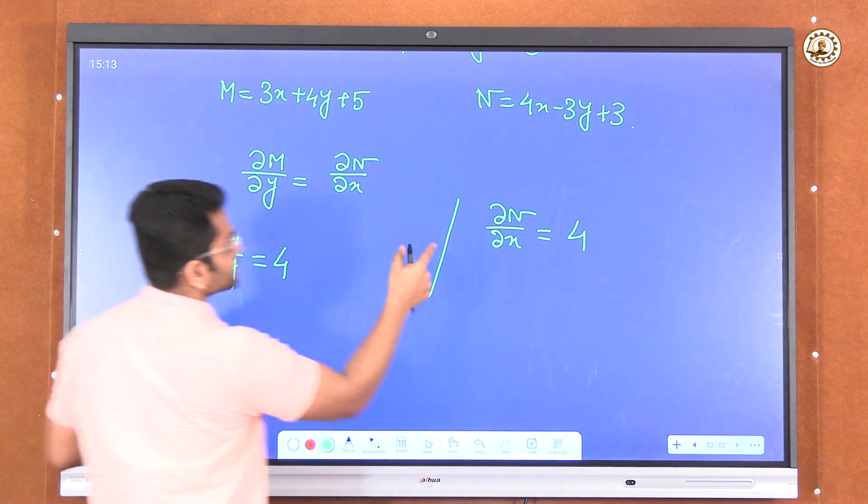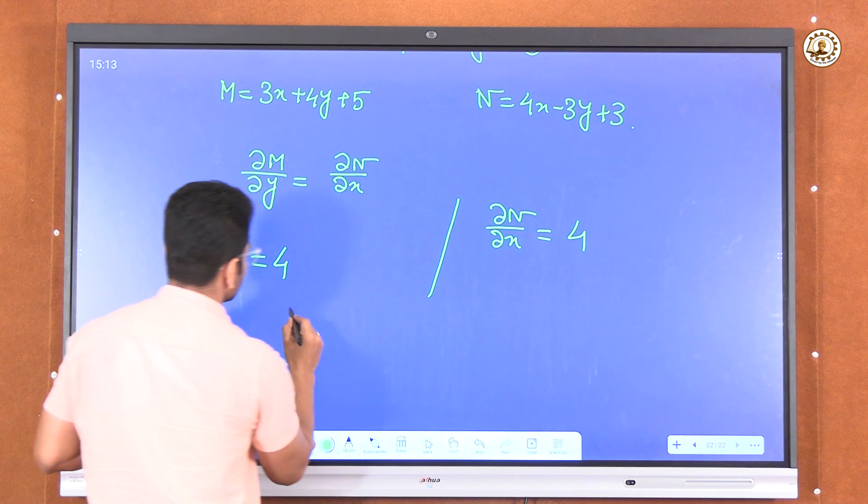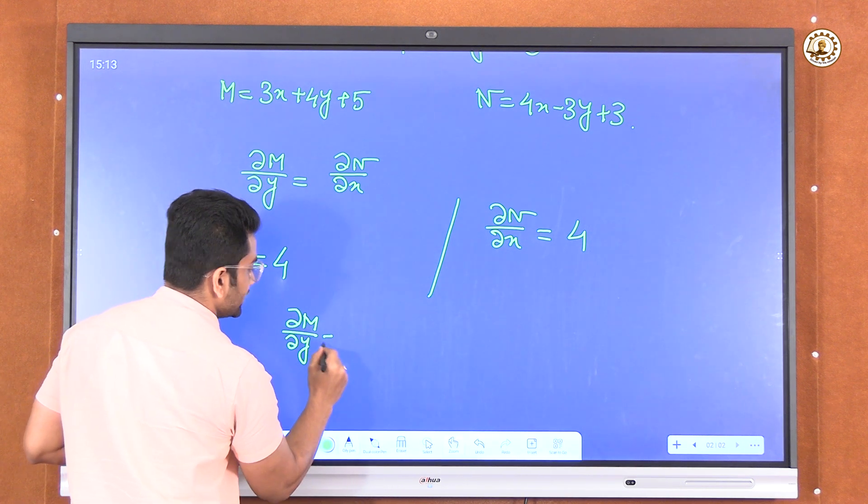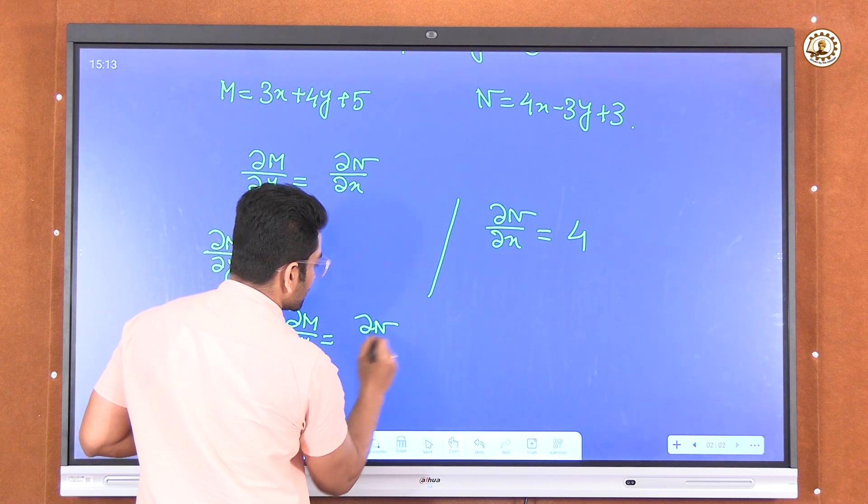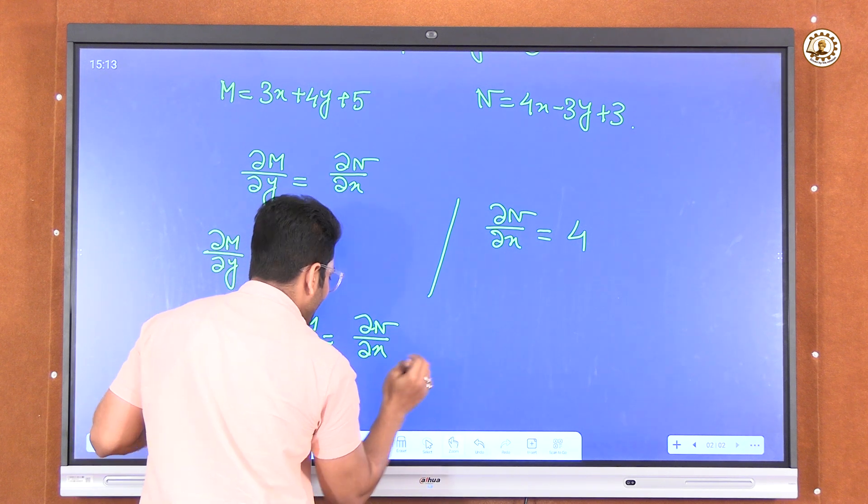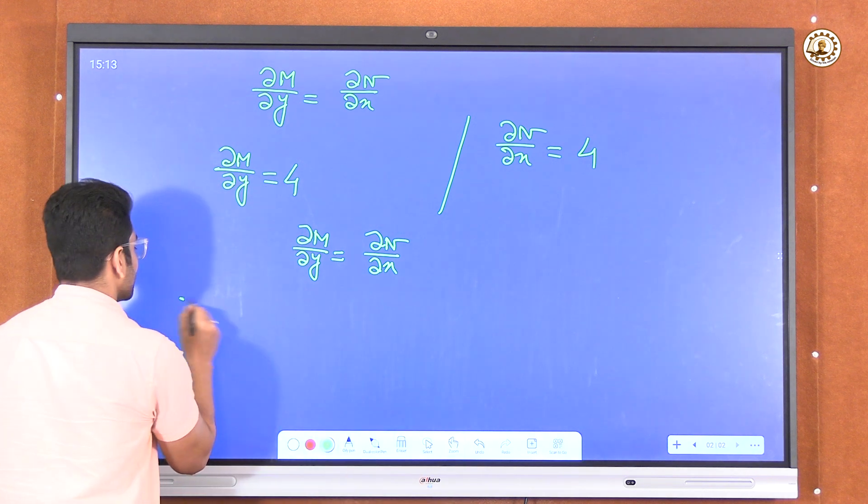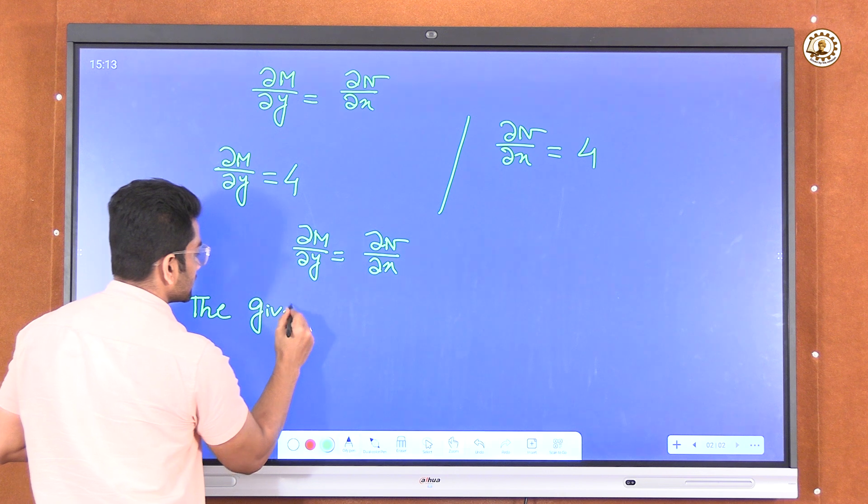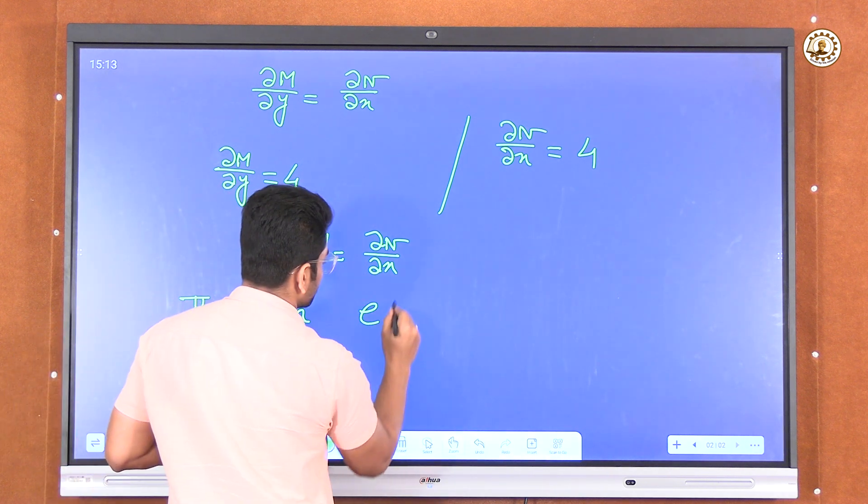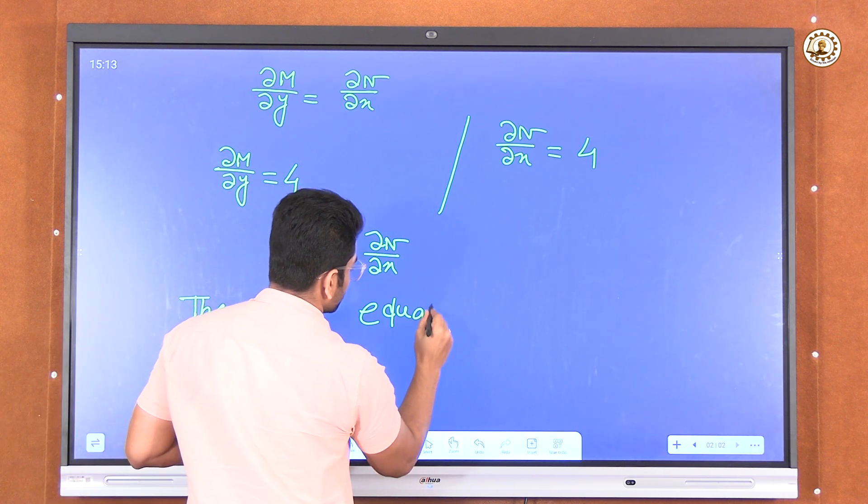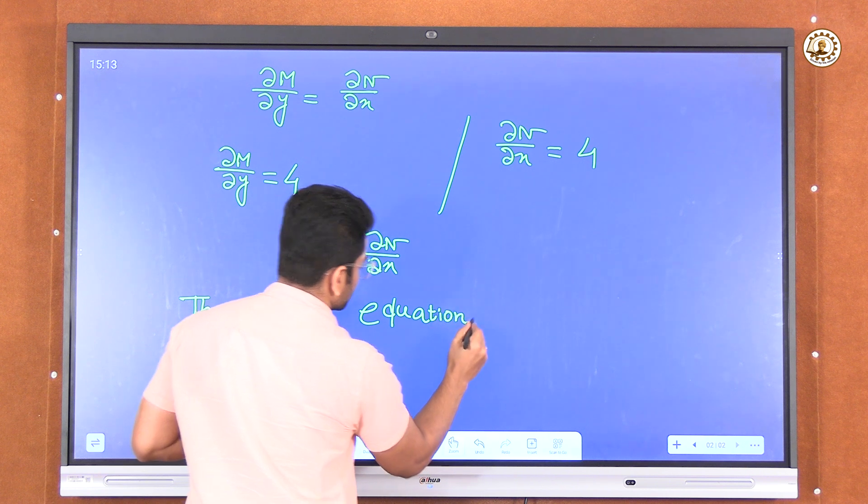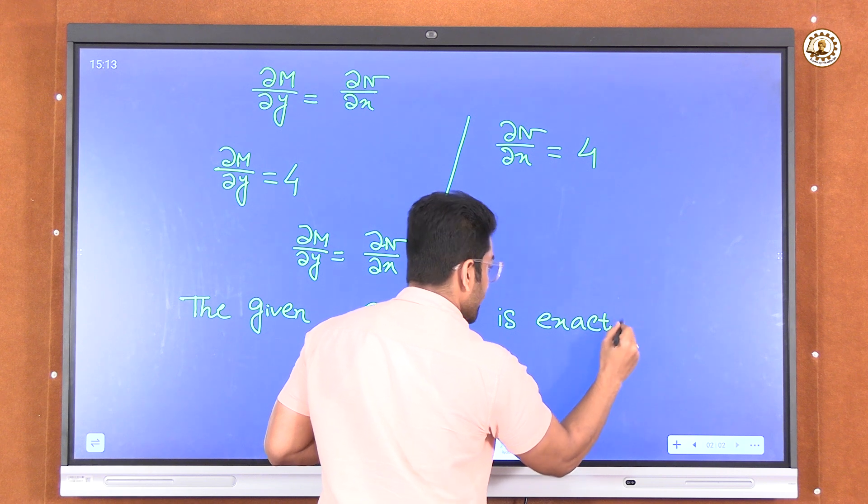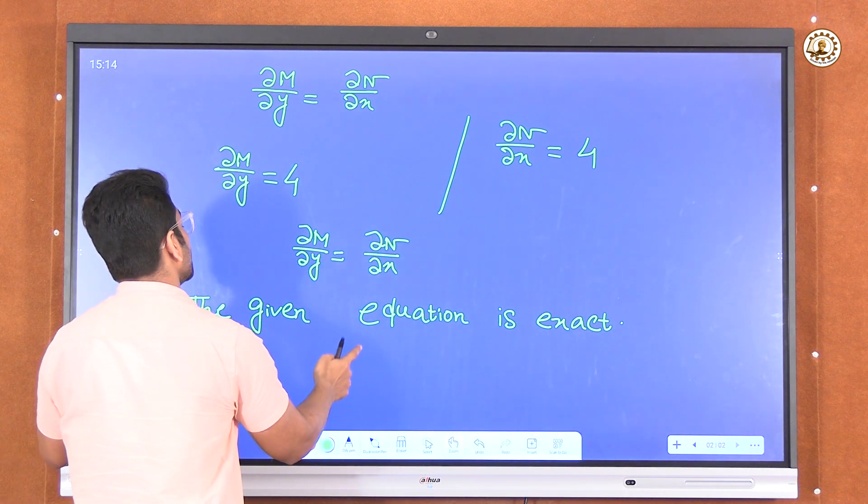Now as these two things are equal, we can say that the given equation is exact. Now how to solve this kind of exact equation?